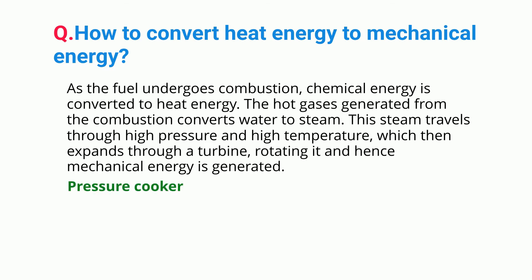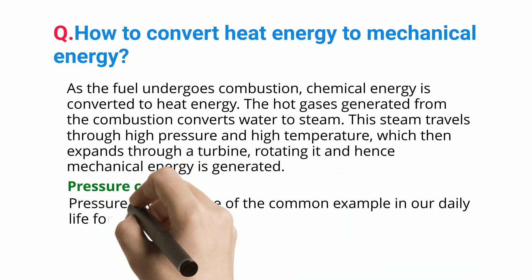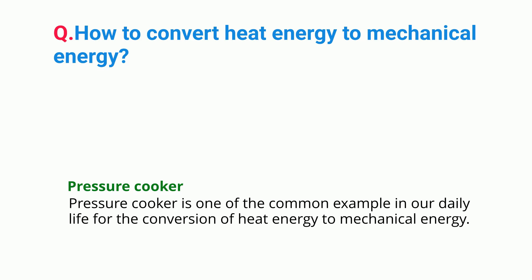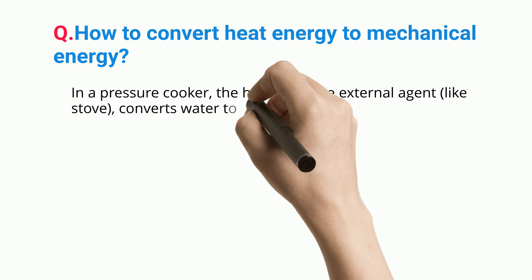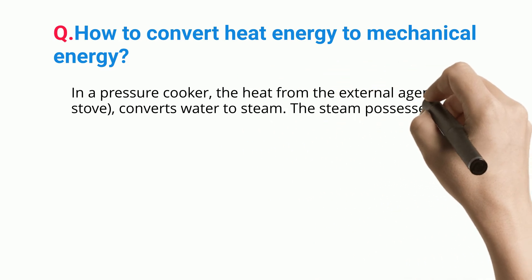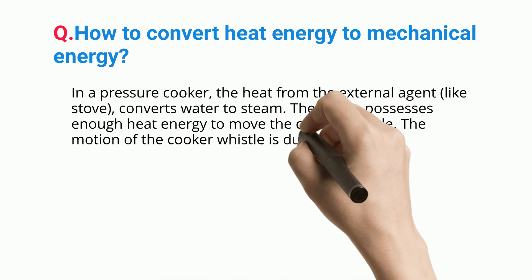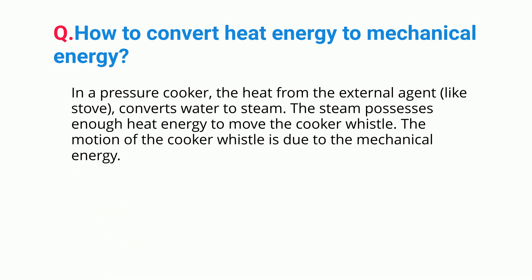Pressure Cooker. A pressure cooker is one of the common examples in our daily life for the conversion of heat energy to mechanical energy. In a pressure cooker, the heat from an external agent like a stove converts water to steam. The steam possesses enough heat energy to move the cooker whistle. The motion of the cooker whistle is due to mechanical energy.